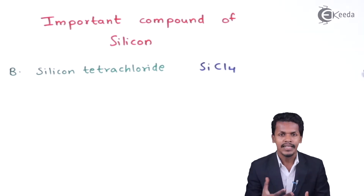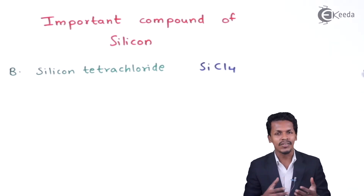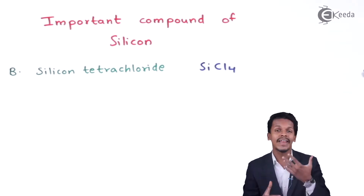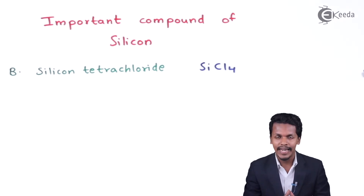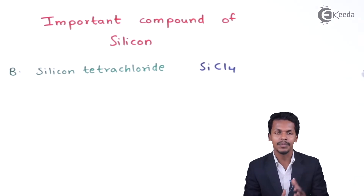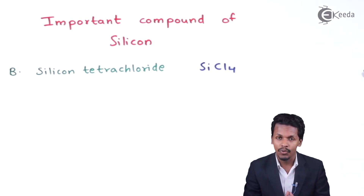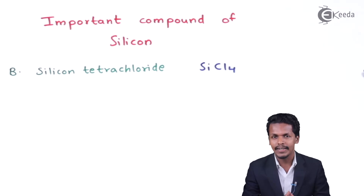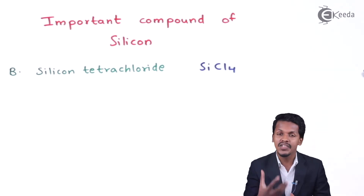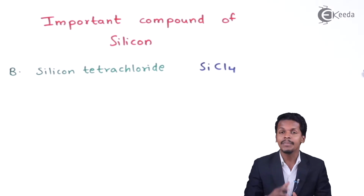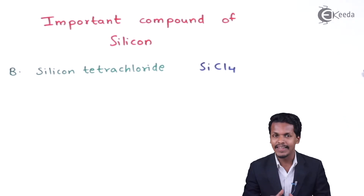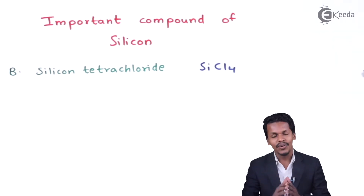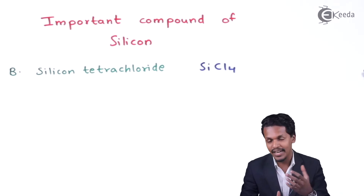Carbon has four electrons in its valence shell, which is why four valence electrons can form four bonds. But carbon does not have d-orbitals in its electronic configuration, so its coordination number cannot be extended beyond four. In contrast, silicon can have empty d-orbitals, and these empty d-orbitals can help increase the coordination number beyond four. That is the reason silicon tetrachloride can undergo various different reactions.